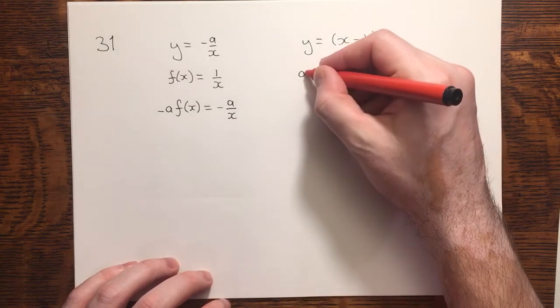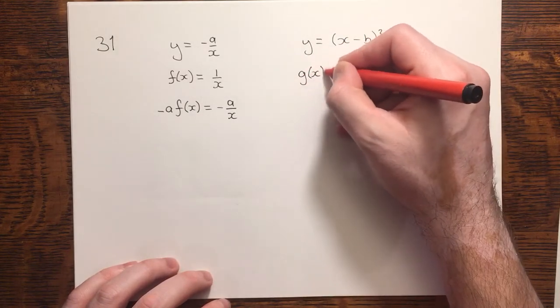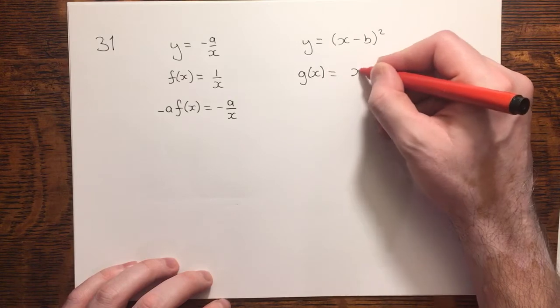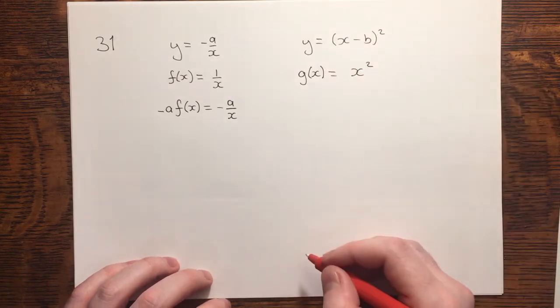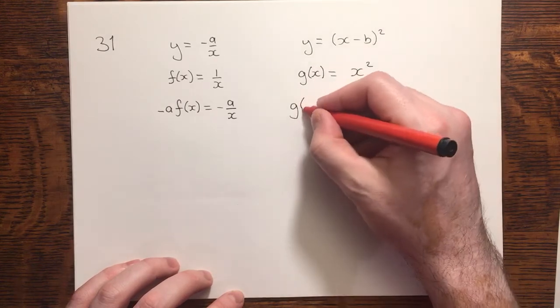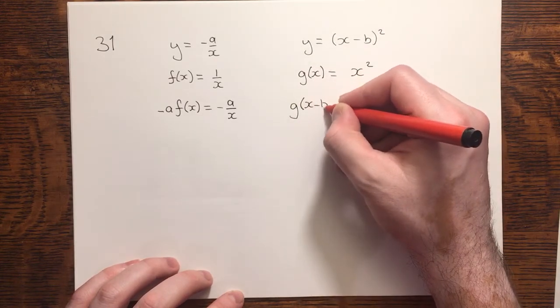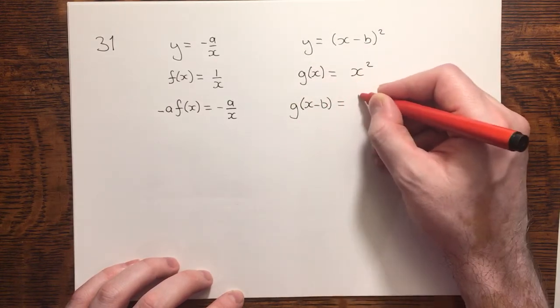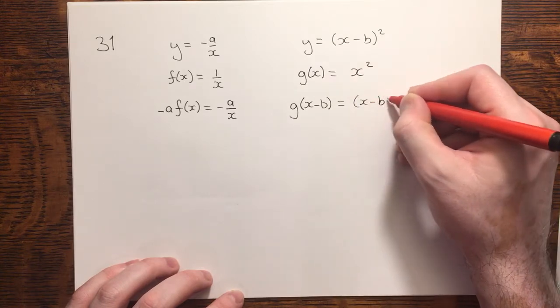This one, I'll call something similar g of x. I'm going to say g of x is x squared. So to get to this, I would have to have g of x minus b, and that would be x minus b squared.